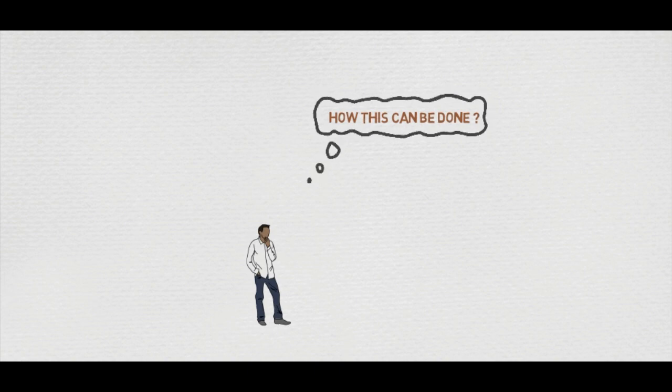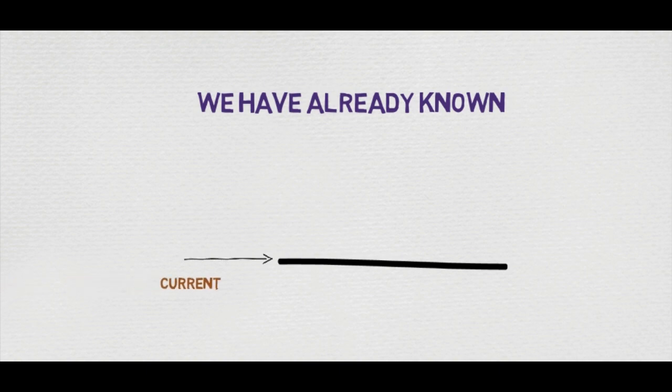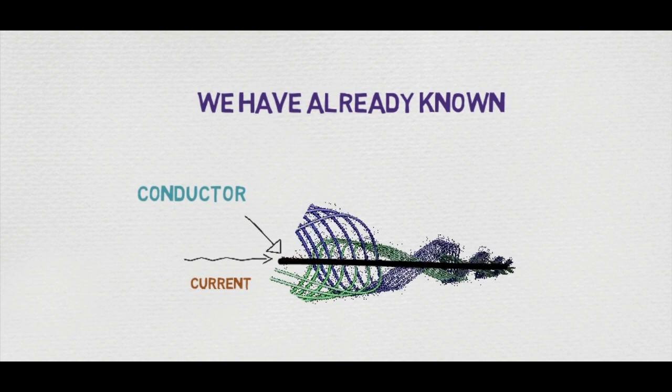But how can this be done? How does it oppose the change of current? We already know that if we take a conductor and pass current through it, then an EMF will generate surrounding the conductor.